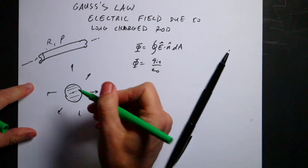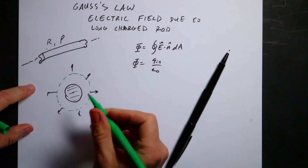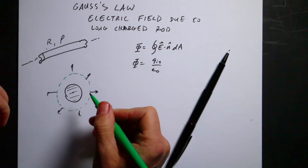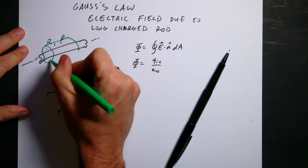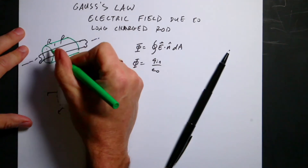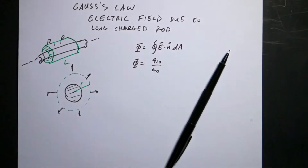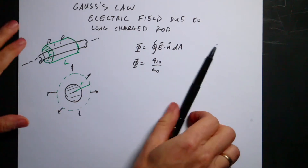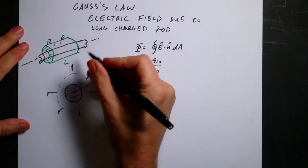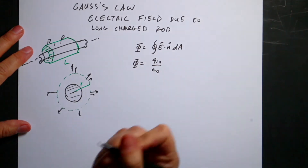I'll start on the outside and then do the inside. We need a closed surface, so I can't pick a circle — it's a cylinder. It has some radius R and a length L. I'll assume that the electric field on this outer surface always points directly away from the rod, so N-hat and E are in the same direction, and E is constant.